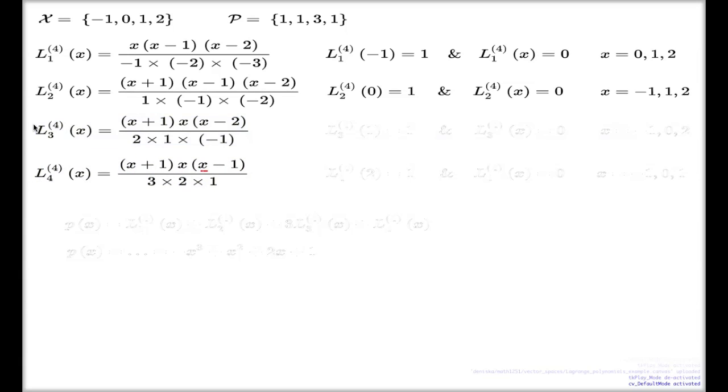For these two polynomials, the same will be true. My third polynomial at the point 1, at the third point delivers 1, and at every other point it delivers 0. And my fourth polynomial delivers 1 at the fourth point, 2, and at every other point it delivers 0.